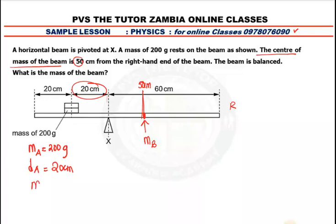M is the mass we don't have, and D is the distance of the mass of the beam from where it is to the pivot. This is 20 plus 20 = 40. So the distance from the center of mass to the pivot — from 50 to here, the pivot gives 40 when you add both sides. So 50 minus 40 gives a difference of 10. DB is 10 centimeters.